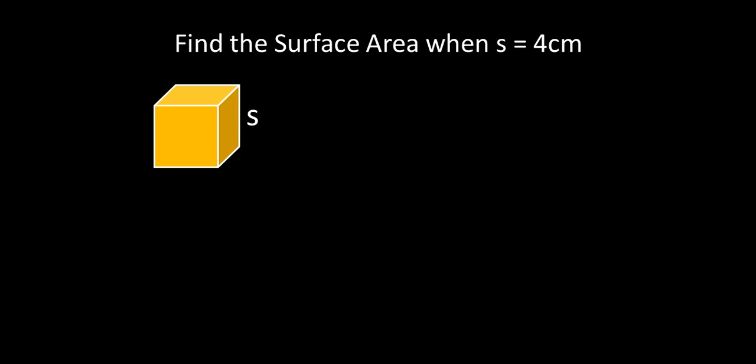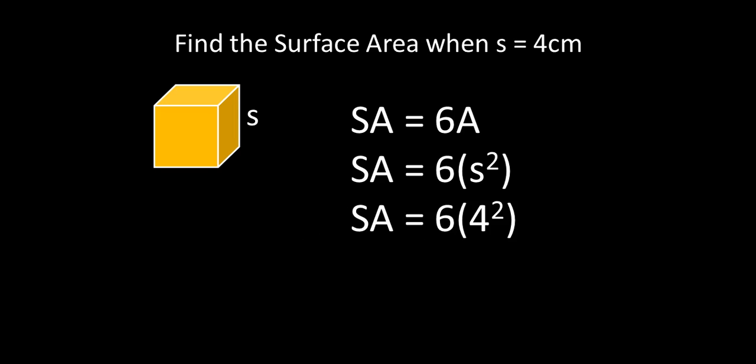So here's an example where we're going to go ahead and do that. Find the surface area of this cube when the side length is four centimeters. So our surface area is six times the area of our square, and our square is the side squared. So in this case, the side length is four.